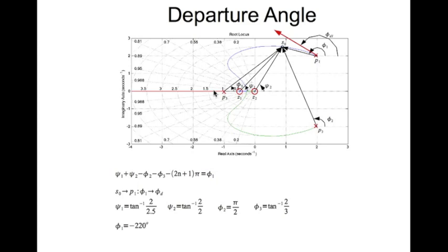And then if you go and calculate, you'll find that phi 1 which is phi D1 would be minus 220 degrees. So minus 220, you go minus 180 is right here and another 40 degrees, this almost looks right approximately. So our answer is right.